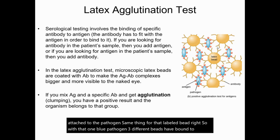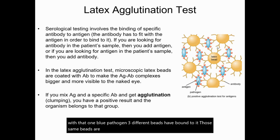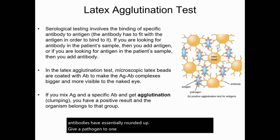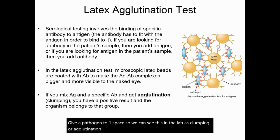Those same beads are also bound to other pathogens. So these antibodies have essentially rounded up the pathogen into one space. We can see this in the lab as clumping or agglutination.